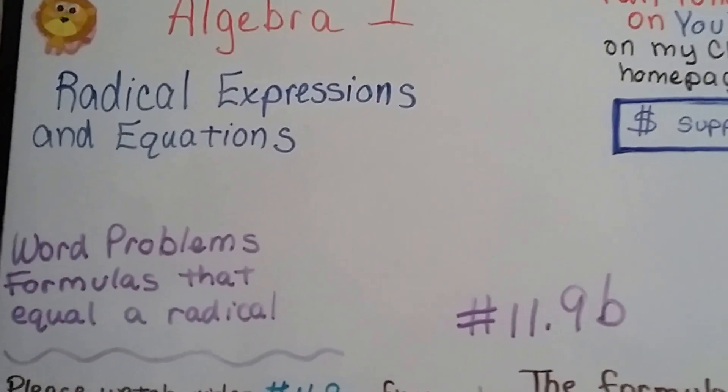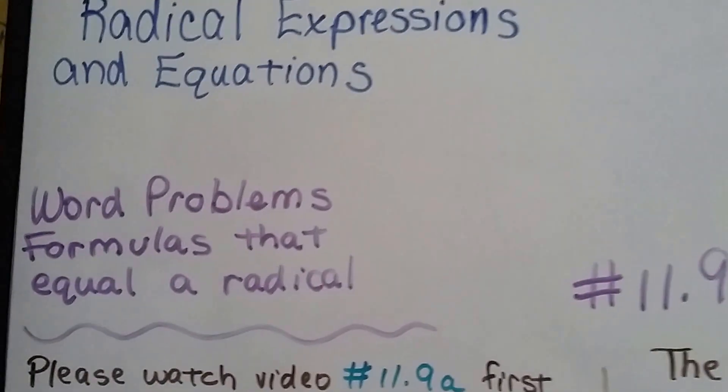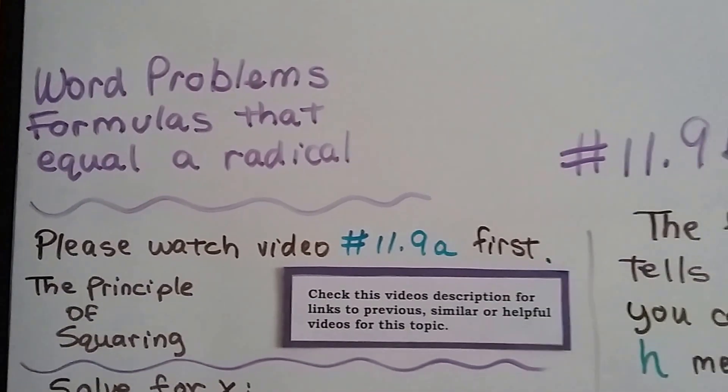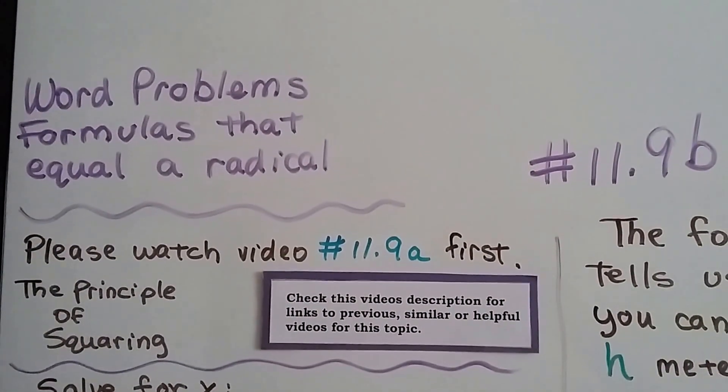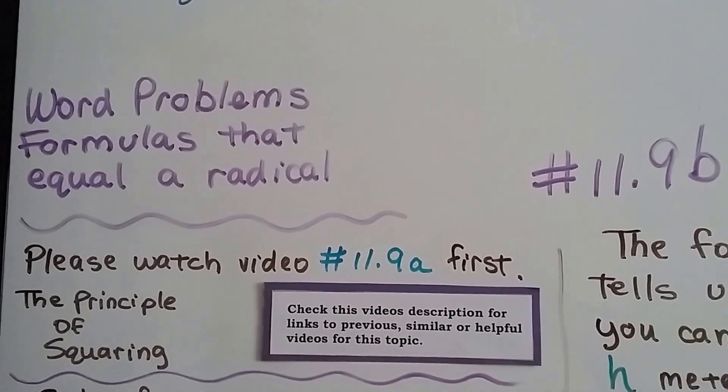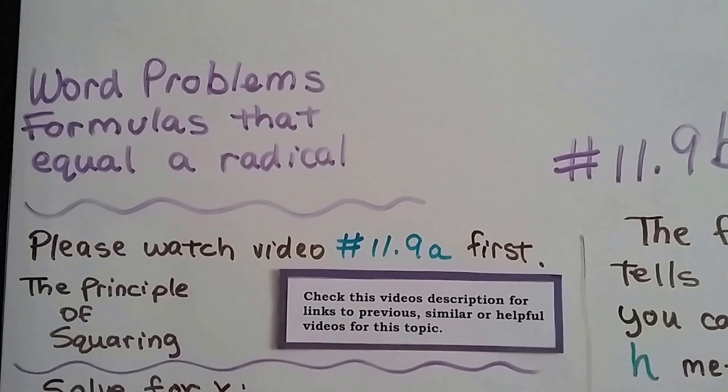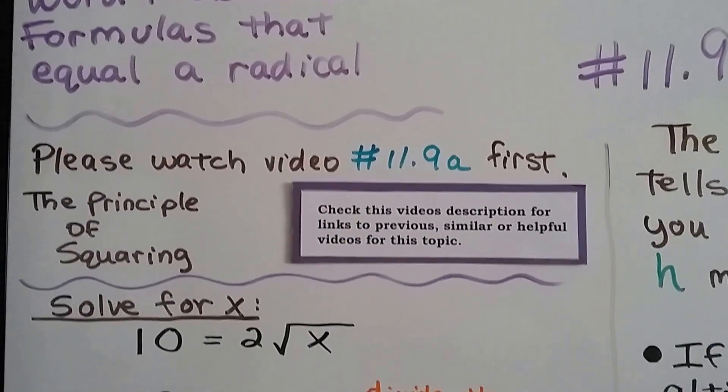Algebra 1, 11.9b, word problems with formulas that equal a radical. If you haven't seen 11.9a first, there's a link in this video's description to take you there. We talked about the principle of squaring. This is 11.9b. You might be okay if you follow along, but you're going to have to pay attention.